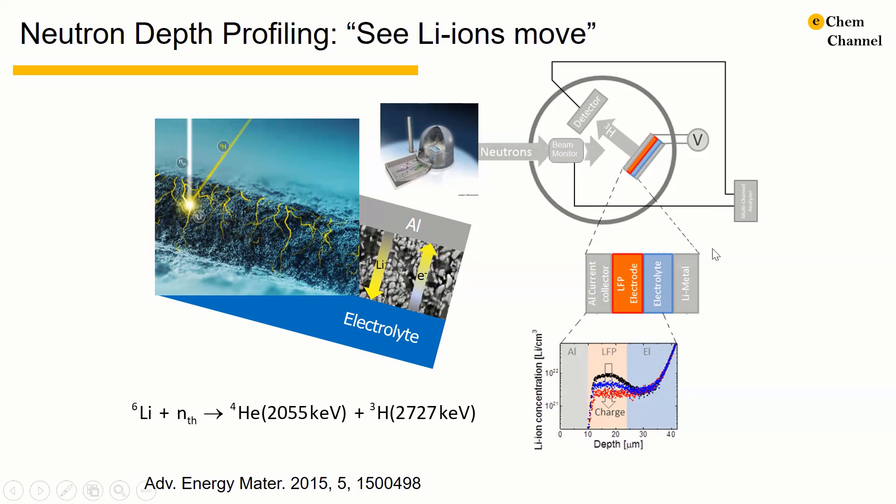The cell is made with aluminum as current collector, lithium iron phosphate and lithium metal as two electrodes, and the organic electrolyte. The lithium iron phosphate here is the electrode that we are going to observe in-situ.